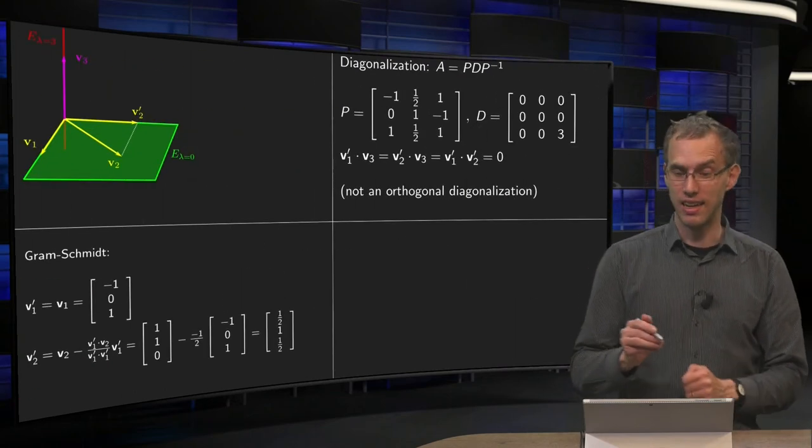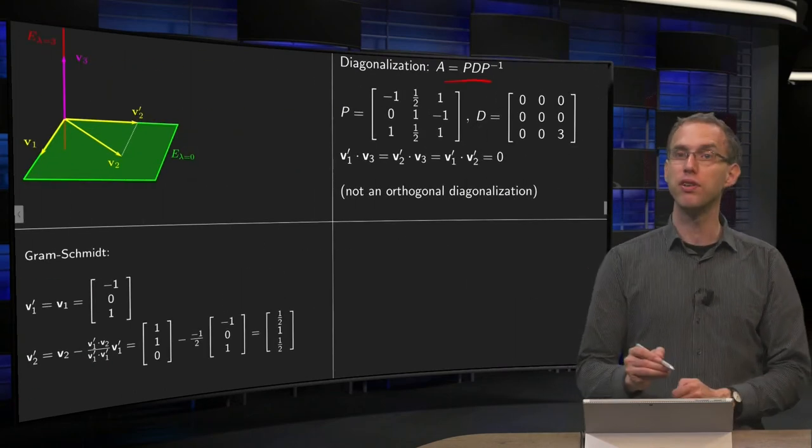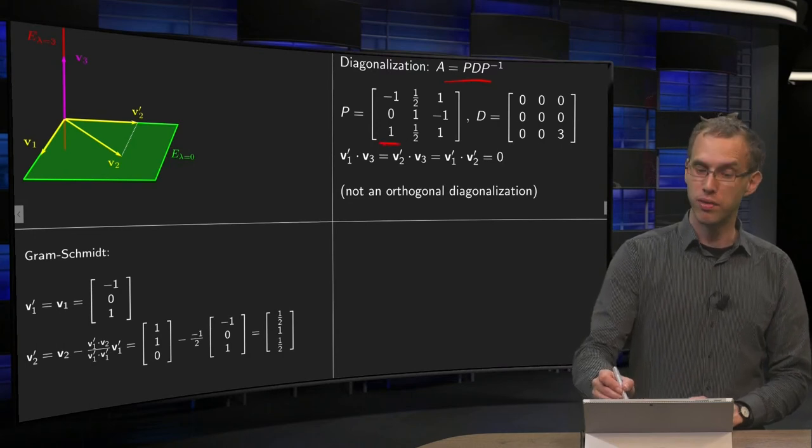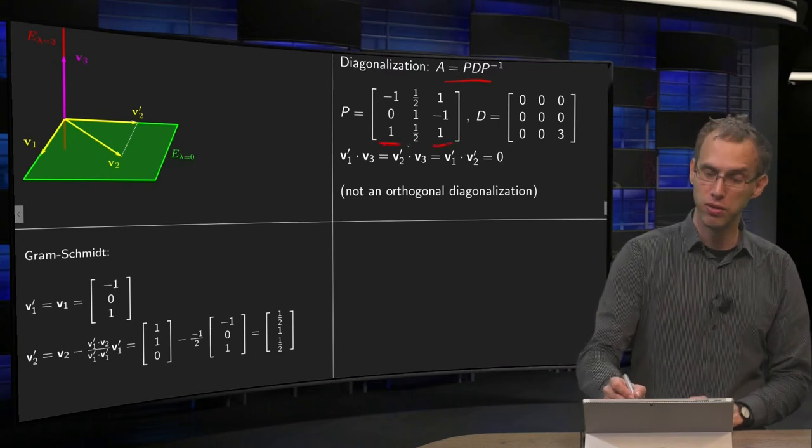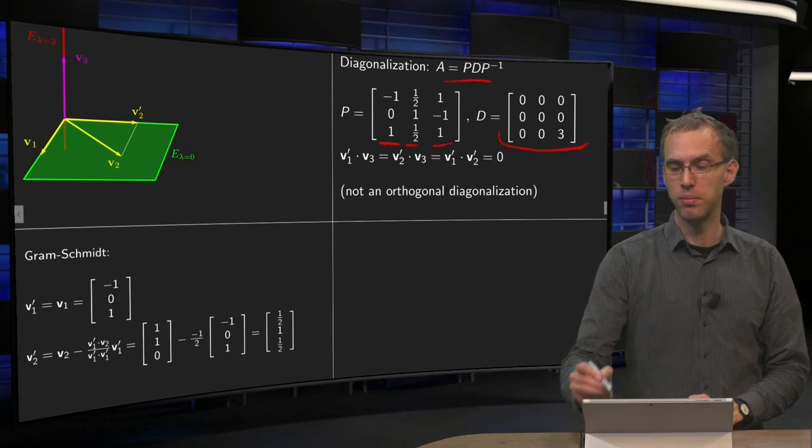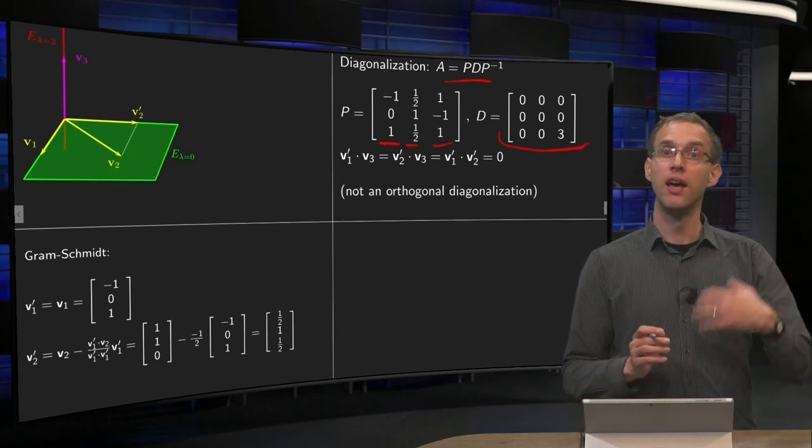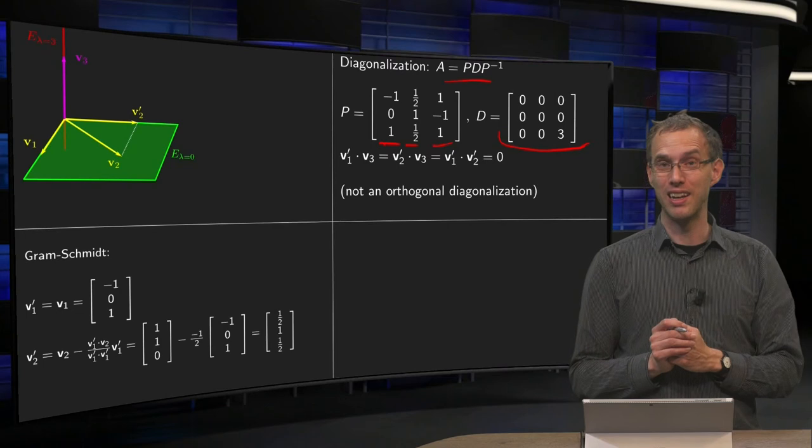So we have a second diagonalization, A equals PDP inverse, where we put our old v1 prime and v1 prime and v3 prime and our new v2 prime, and D remains the same, of course. Do we have an orthogonal diagonalization now?